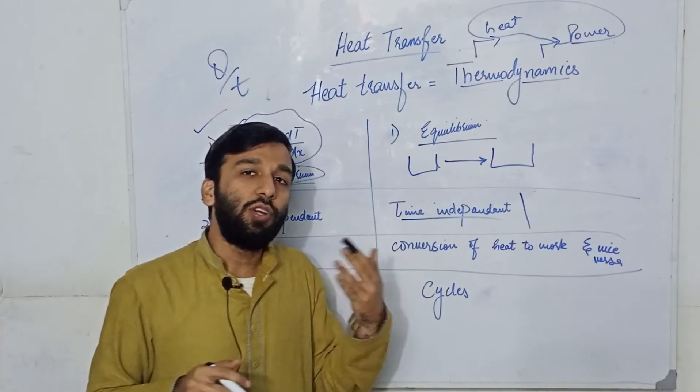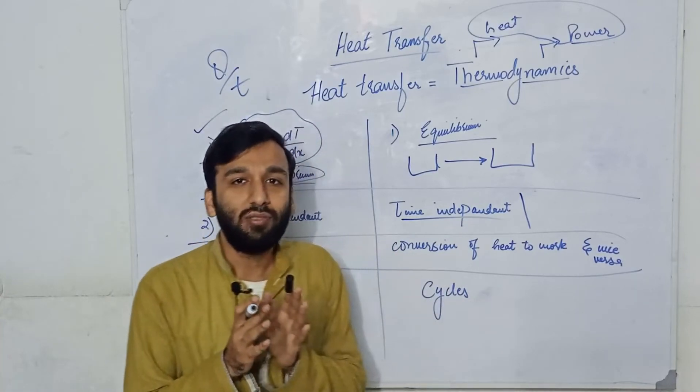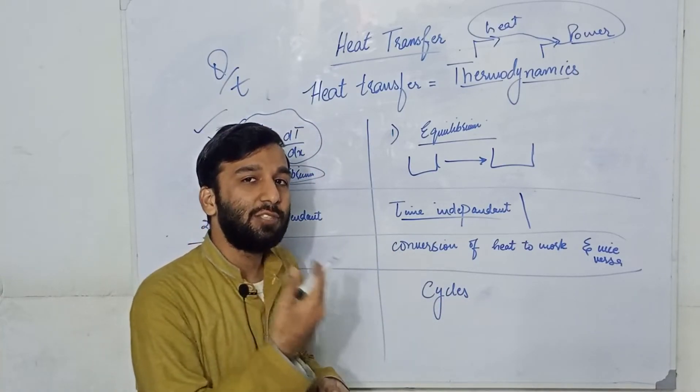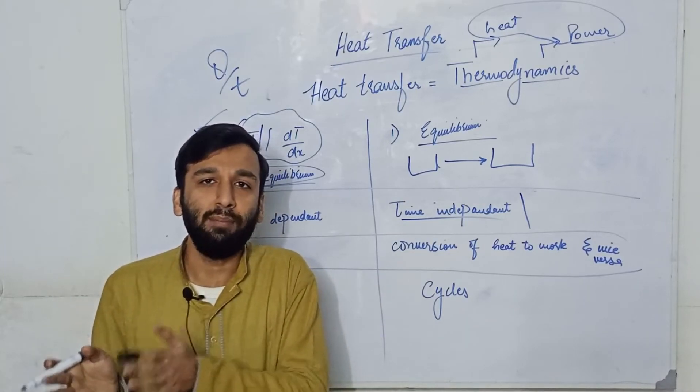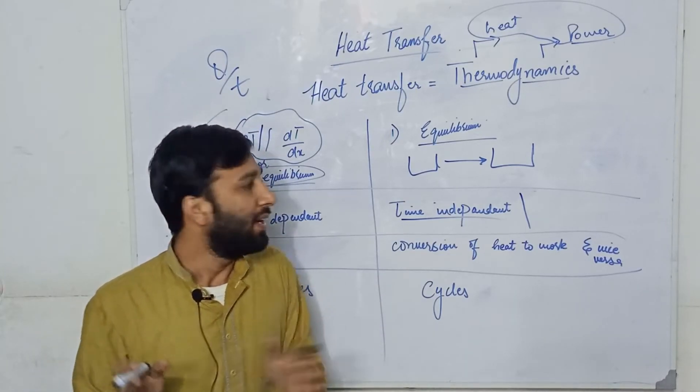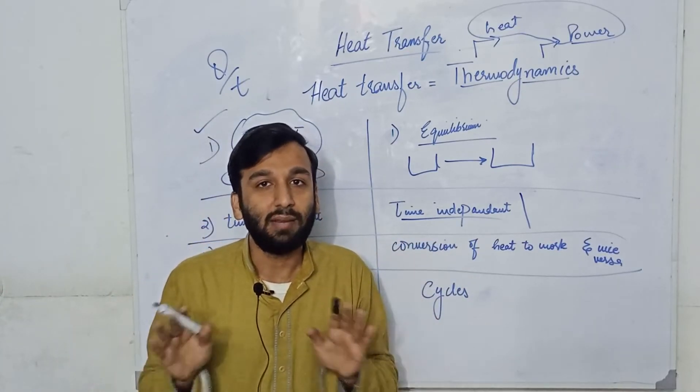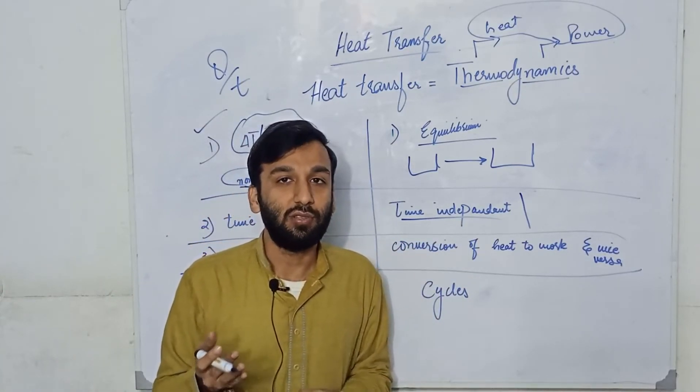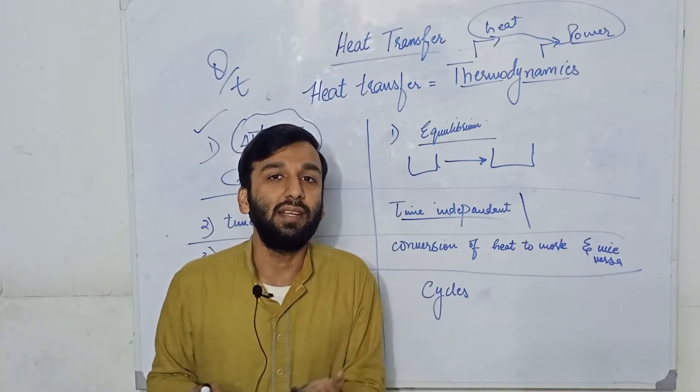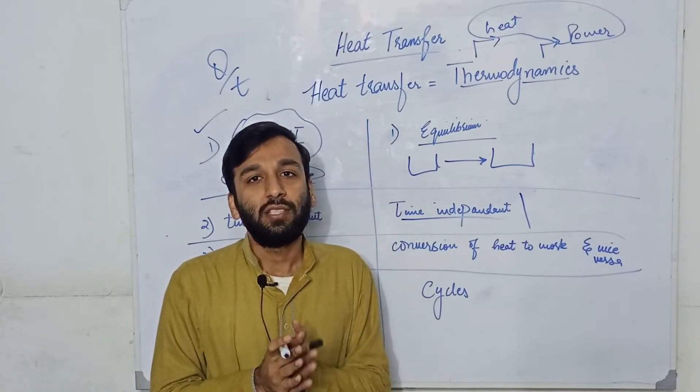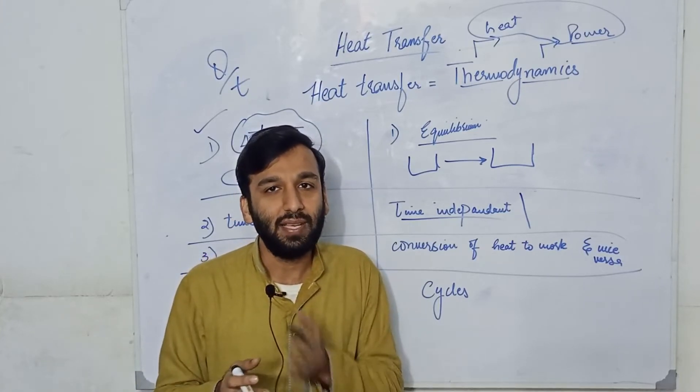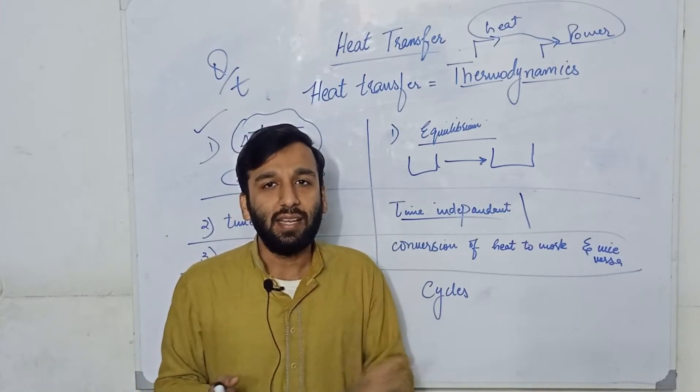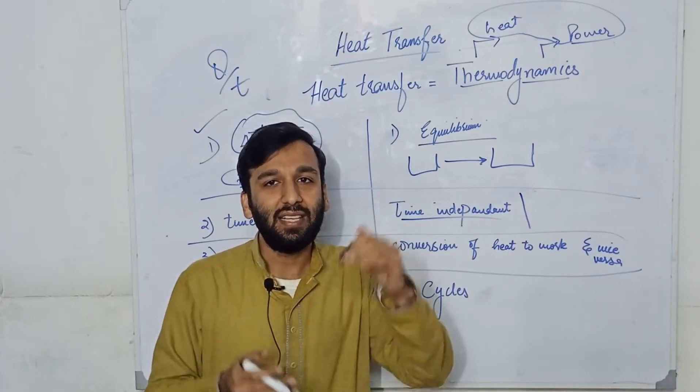If we go into chemical thermodynamics, it also tells us that this reaction is possible or impossible at this temperature and pressure. But it doesn't tell us in chemical thermodynamics how much time it will take for a reaction to complete. So this time we calculate using kinetics. By increasing the kinetics of the reaction, we decrease the time for that reaction.